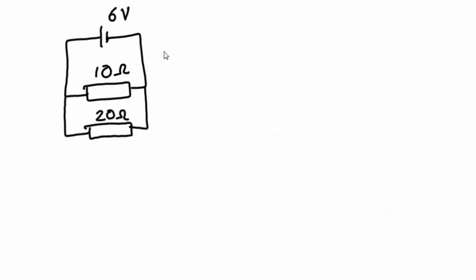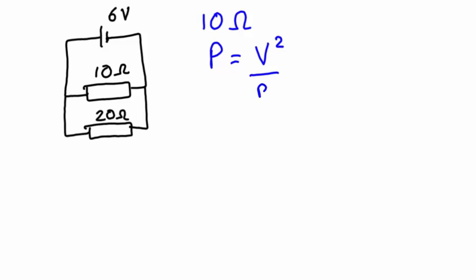Now let's look at this parallel circuit using the same 6 volt power supply and the same 10 ohm and 20 ohm resistors, just connected in parallel. We can't use P equals I squared R here because the current through the two branches is going to be different. However, we can see that the potential difference across each resistor is the same — they are both seeing 6 volts. So if we want to know the power dissipated by the 10 ohm resistor, we'll need to use power equals V squared divided by resistance.